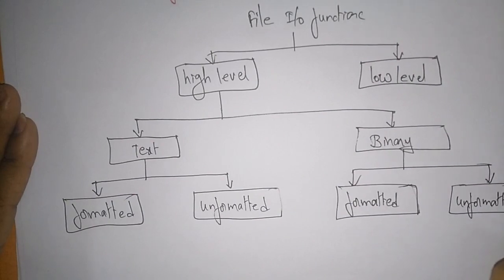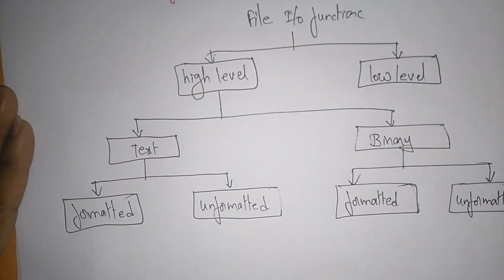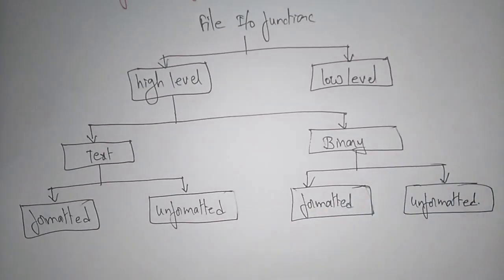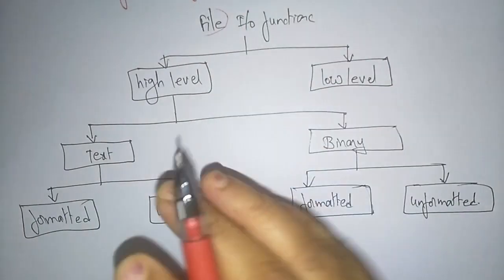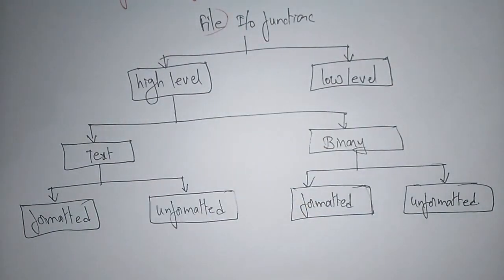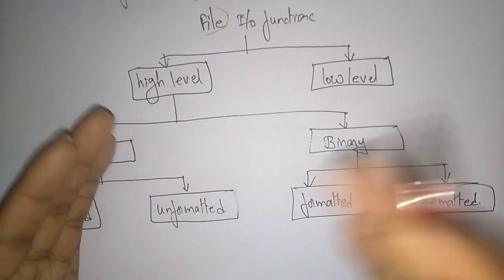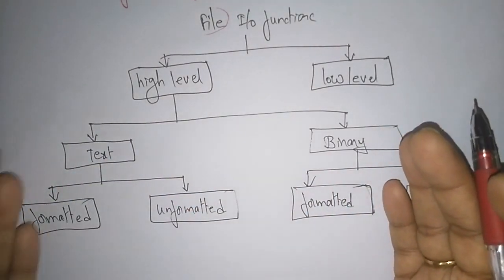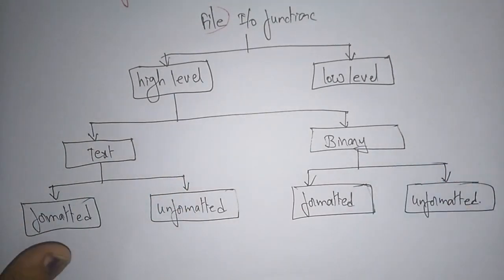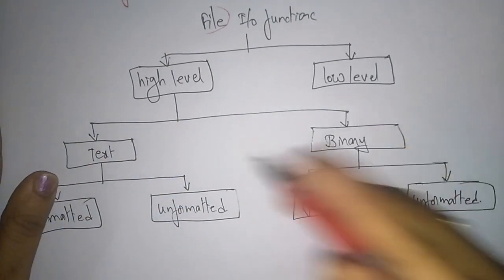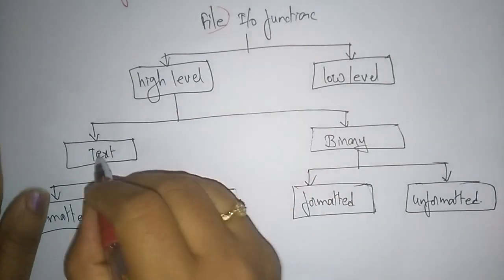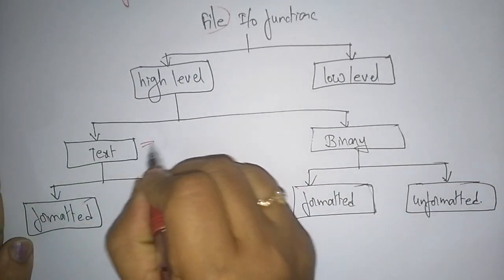So this is the classification of file I/O functions. A file is nothing but a collection of records used to store and retrieve data. The data present should be in high level — either in text format or in binary format. Text may be formatted or unformatted, and binary may be formatted or unformatted.